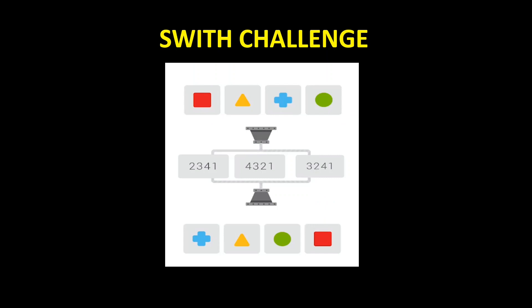The next challenge is the switch challenge. You will be given a few geometrical figures uniquely colored at the input side, and when they are passed through a funnel, a resultant output is produced. You have to identify how the funnel has processed the figures. The tip is to start looking from the output side. In the output, the plus was originally at the third position of the input, so your first option is 3; the triangle was at position 2; the circle at position 4; and the red square at position 1. So the answer is 3, 2, 4, 1.